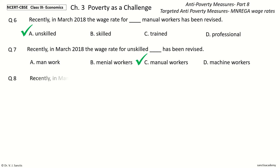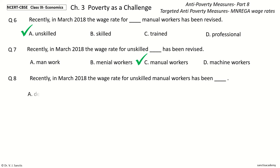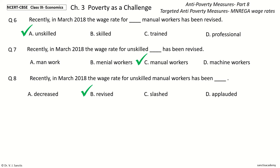Question 8: Recently, in March 2018, the wage rate for unskilled Manual Workers has been Dash. The options are: Decreased, Revised, Slashed, Applauded. The answer is Revised. Recently, in March 2018, the wage rate for unskilled Manual Workers has been Revised.